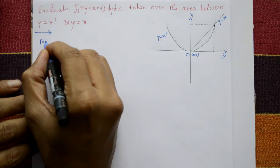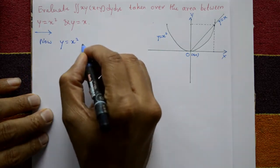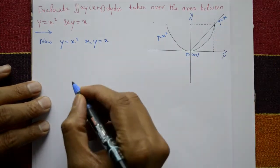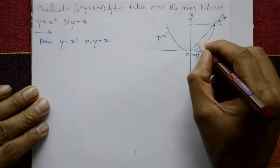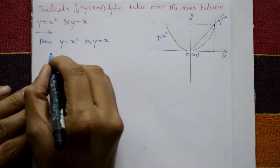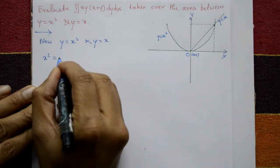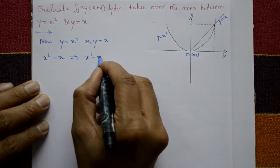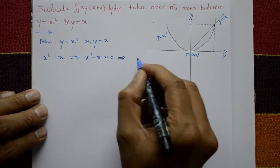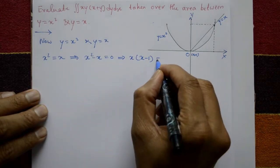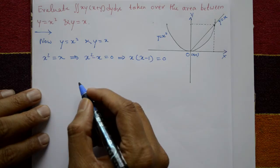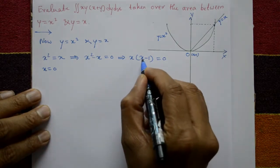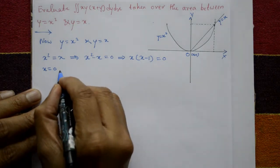We have two curves: y equals x squared (parabola) and y equals x (straight line). To find the points of intersection, set x squared equal to x. So x squared minus x equals zero, take x common: x(x minus 1) equals zero, giving x equals 0 and x equals 1.